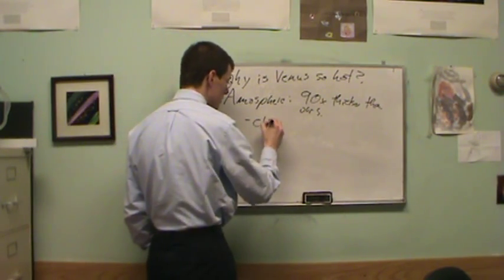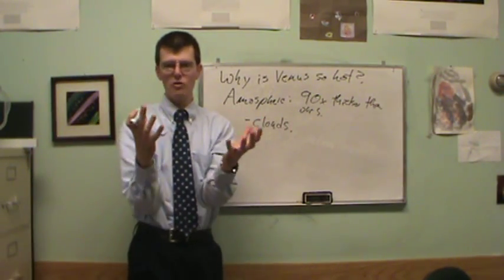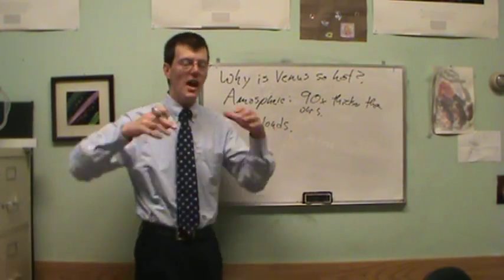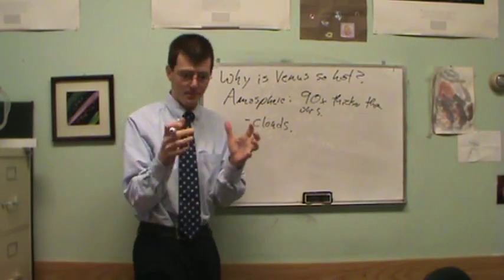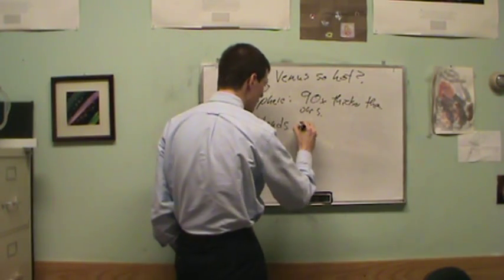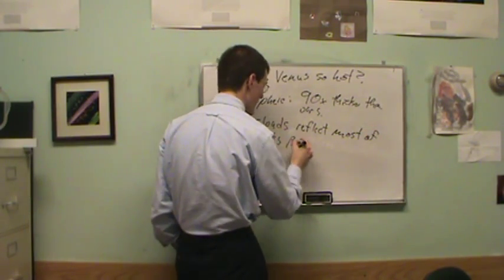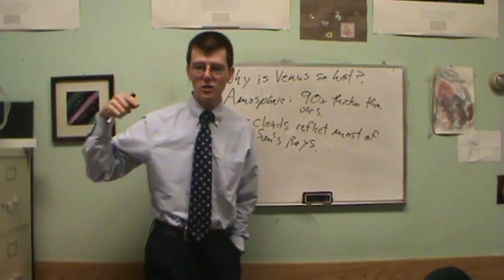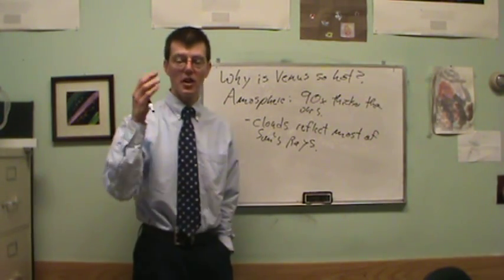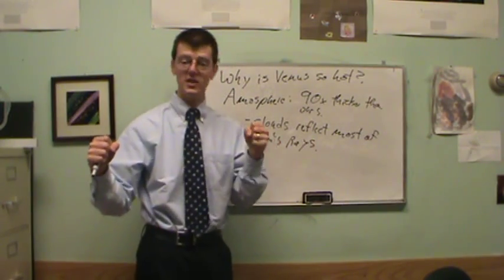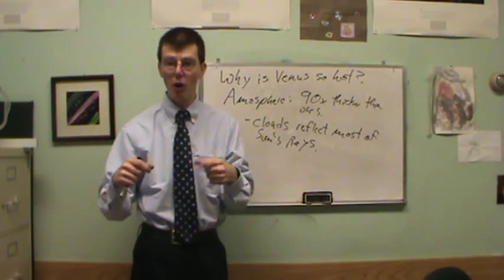On the other hand, we also have clouds, and the clouds mean that Venus reflects most of the Sun's rays. It's covered with these very white clouds made of sulfuric acid, and so most of the Sun's rays that hit Venus reflect off. As a matter of fact, there are more of the Sun's rays penetrate down to the Earth than they do on Venus, because at least we have gaps in our clouds. Venus is covered with clouds 24-7. There are never any gaps in the clouds.